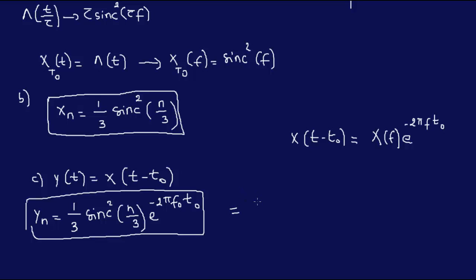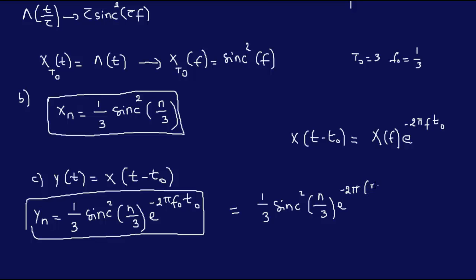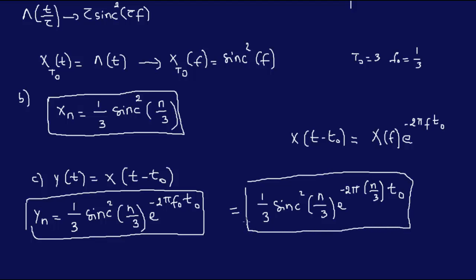If you replace with f₀ = 1/3 — since the period T₀ equals 3, the fundamental frequency f₀ is 1/3 — then Y(N) equals (1/3) · sinc²(N/3) · e^(−j2πN/3 · t₀). And that's the final answer for Y(N) in terms of X(N).